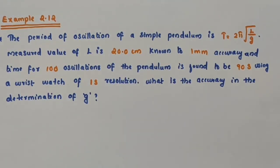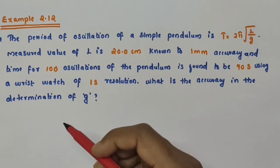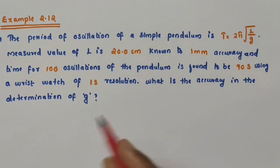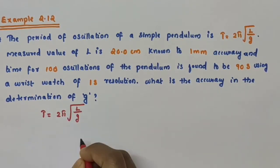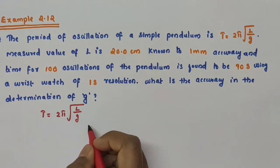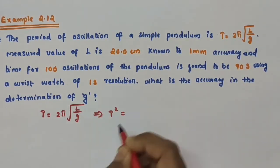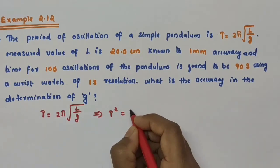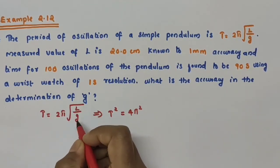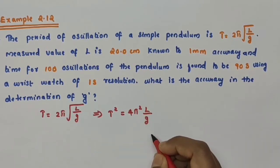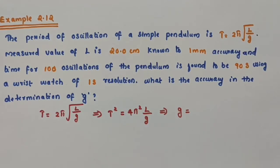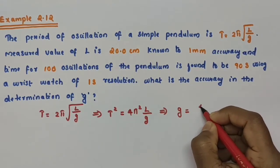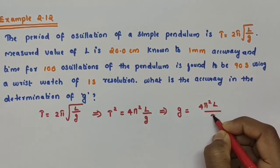So here we want to find out the accuracy in the determination of acceleration due to gravity g. For that, we have the equation T = 2π√(L/g). Squaring both sides, T² = 4π²·(L/g). From this expression we get an expression for g: g = 4π²L / T².